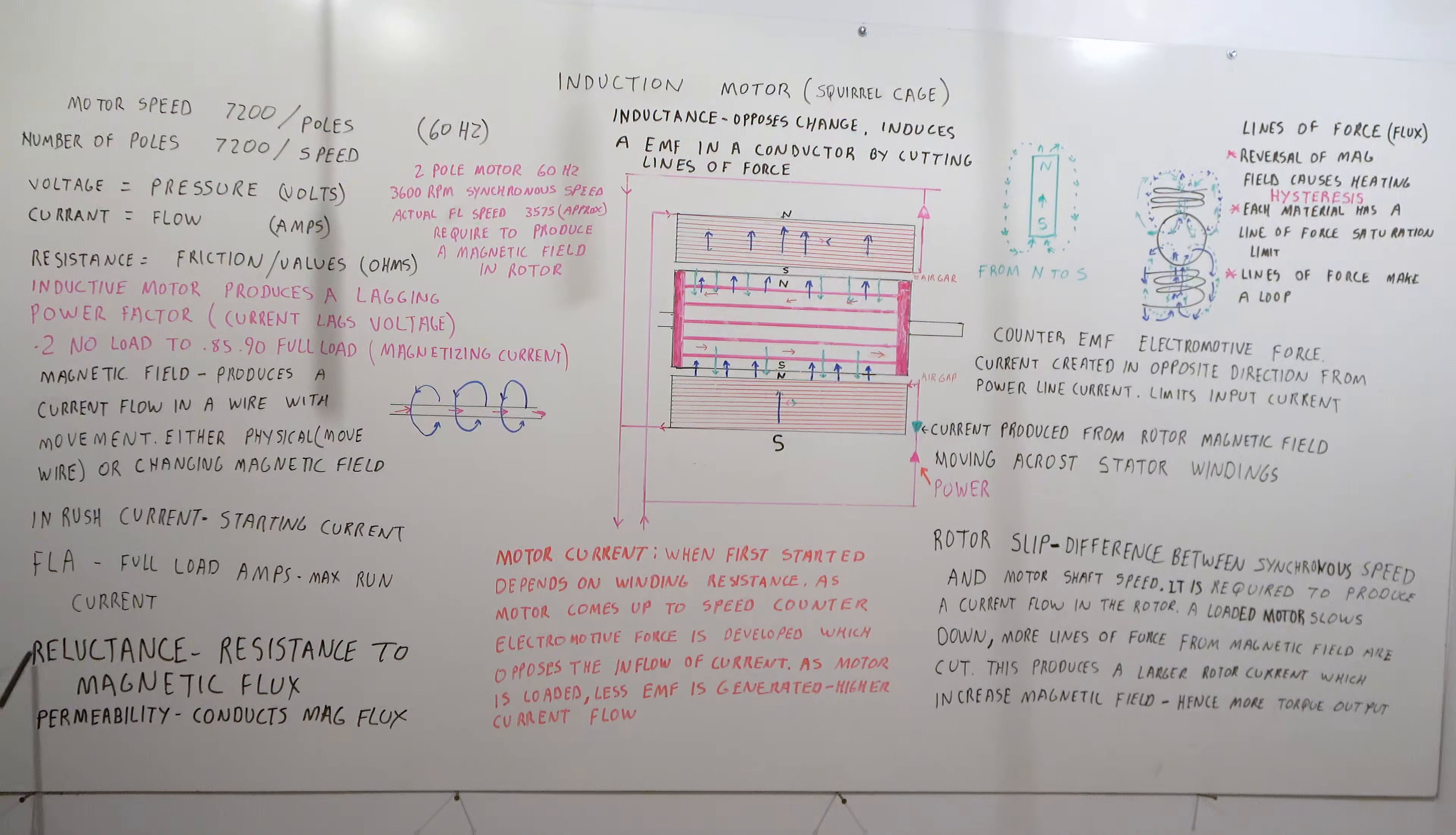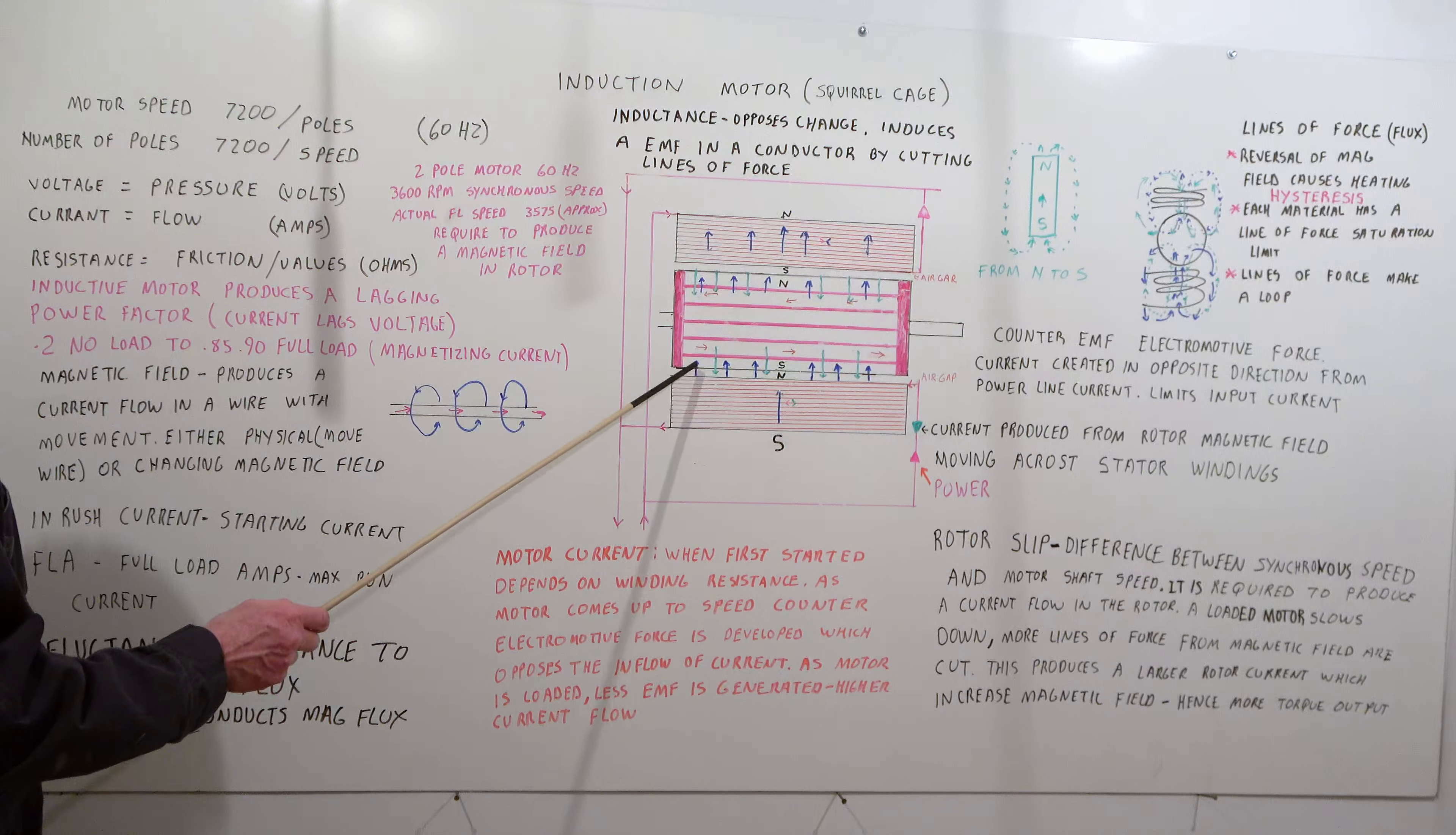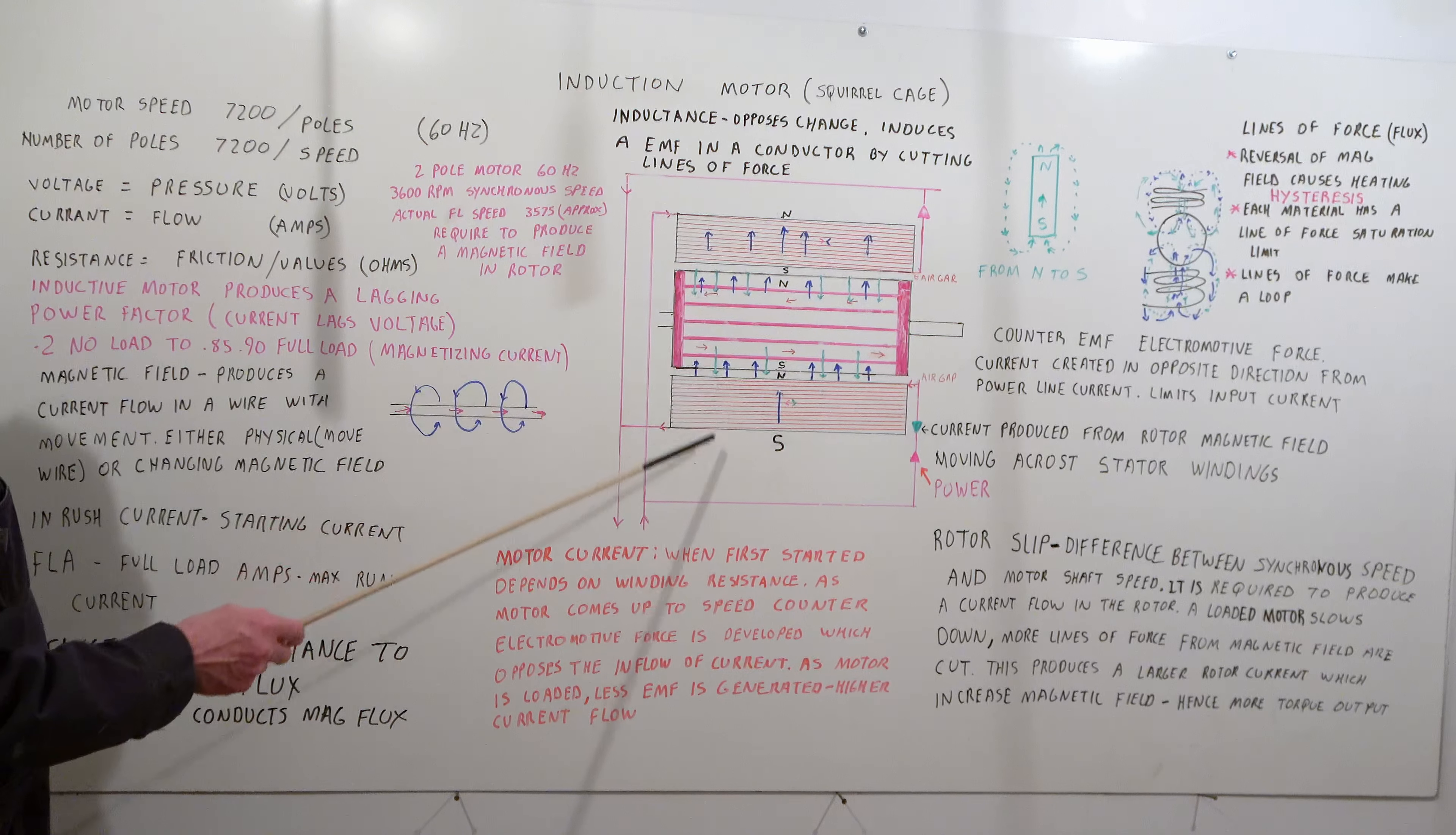Some magnetic terms. Reluctance is resistance to the magnetic flux and permeability conducts magnetic flux. So anytime you have an air gap you have reluctance. Your cores have permeability. This is kind of the magnetic circuit how much of an air gap you have. The tighter this is the less reluctance. It's part of the magnetic circuit on the motor design.